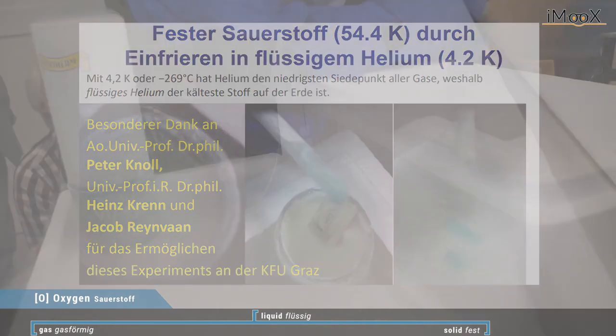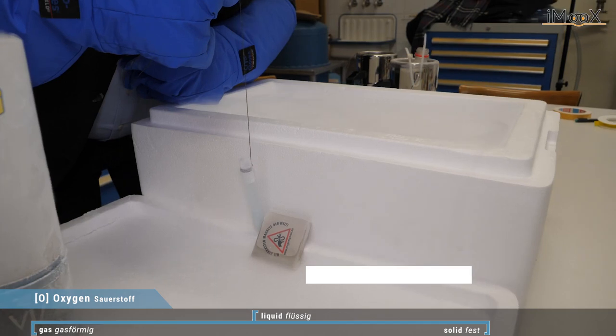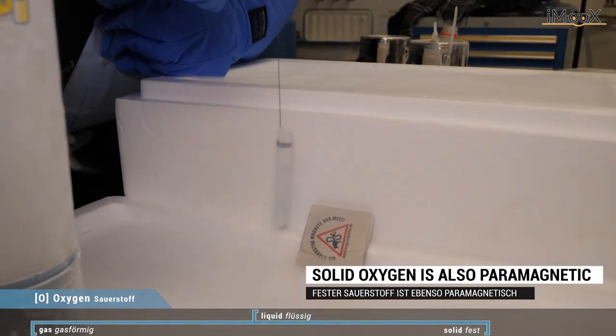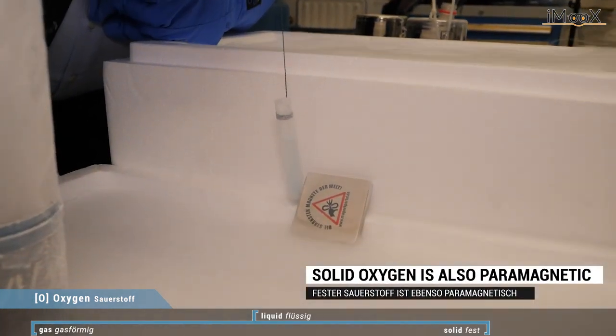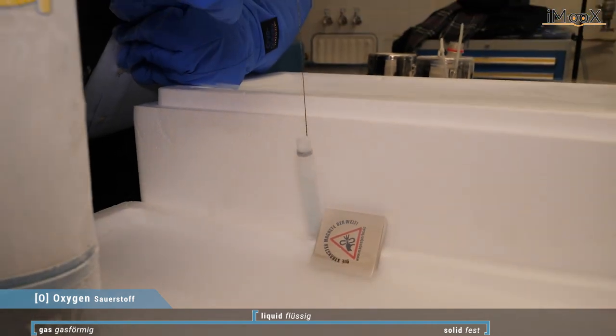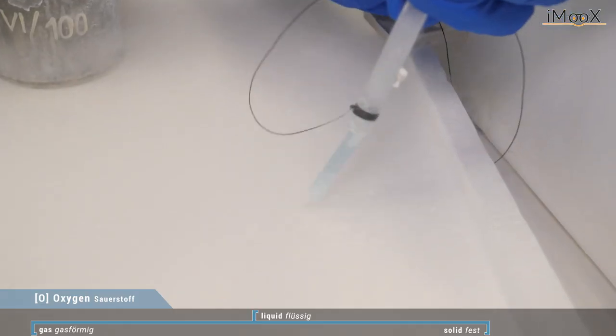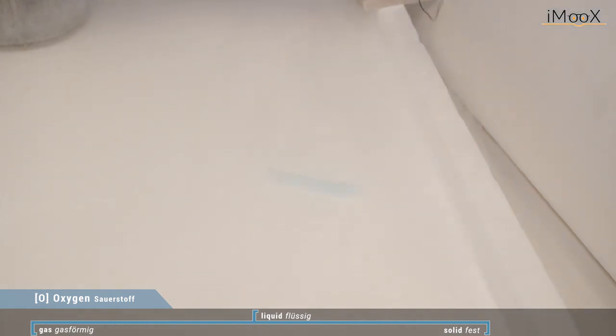Here also you can see that it is paramagnetic. So here we have now solid oxygen, again bluish color, it's frozen and you see it's sticking on the magnet. And at the end again here we have some solid oxygen and if we let it go it just ends up as gas.